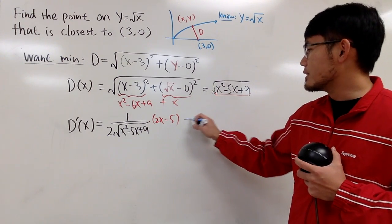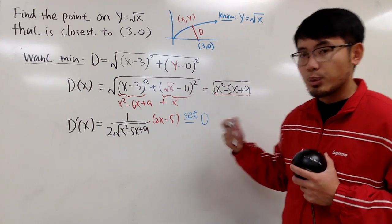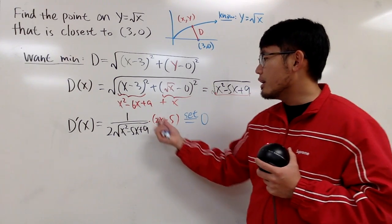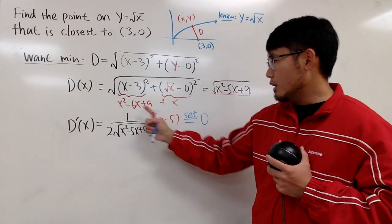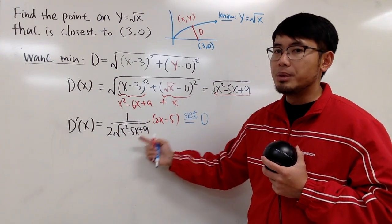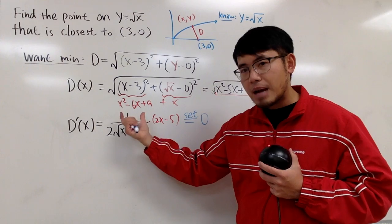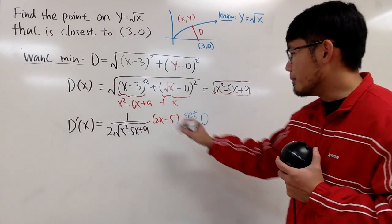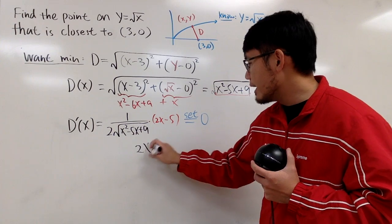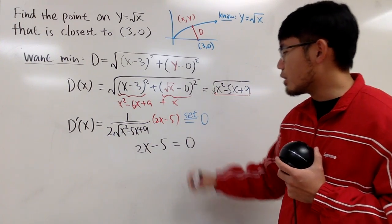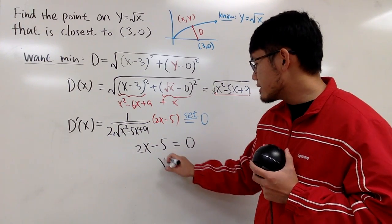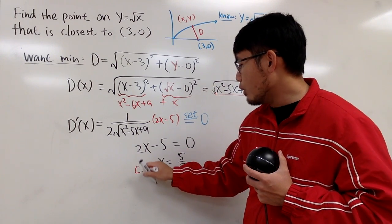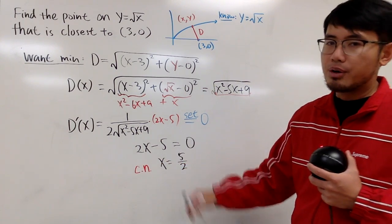Now, we are going to set this to be 0, so we can find our critical numbers. Well, this right here, it's on the top. In order for us to have a fraction to be 0, we just need to worry about the top being 0. So from here, we know we must look at 2x minus 5 equals 0. And then you can just do this real quick. You get x is equal to 5 over 2. And this right here is our only critical number.